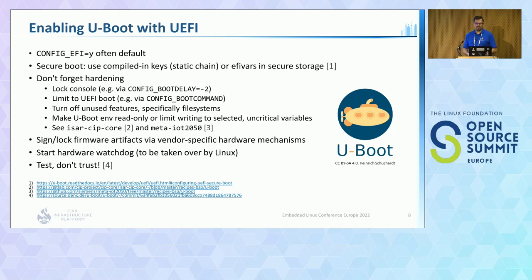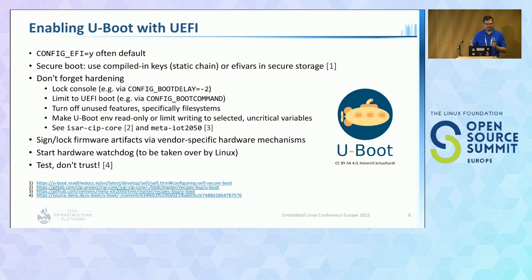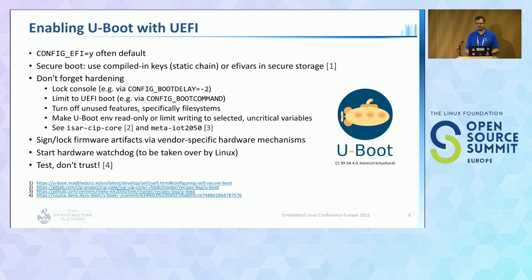The next step is to sign and lock the firmware artifacts — that's the vendor-specific mechanism. Don't forget to start the watchdog in U-Boot, as Linux takes over from there; if you start it later you may have a gap. And an important note: test everything. This is still relatively fresh. There was a bug found during testing recently — it's fixed in the latest U-Boot version — but it's always good to have basic security mechanisms checked intensively by your system test.